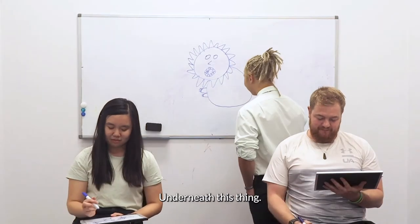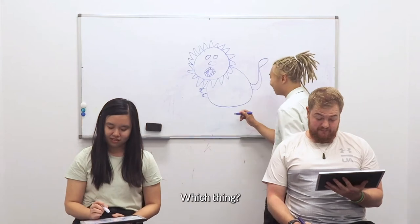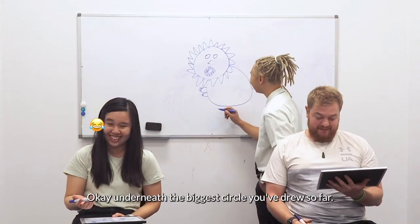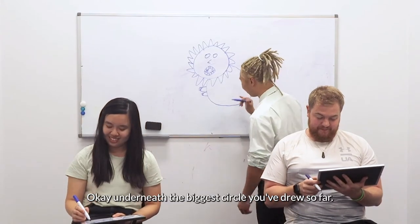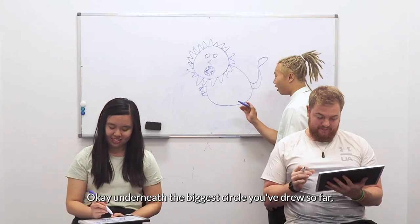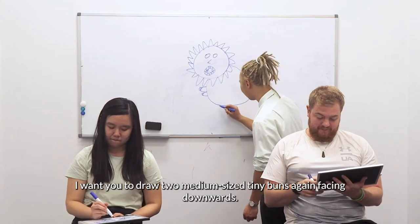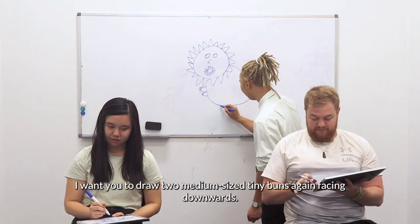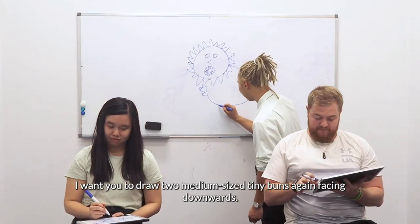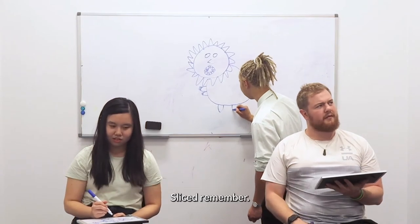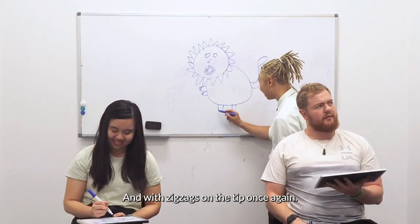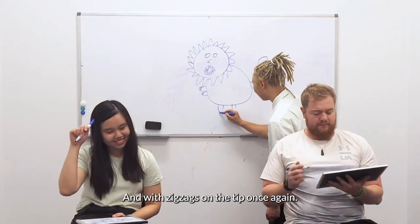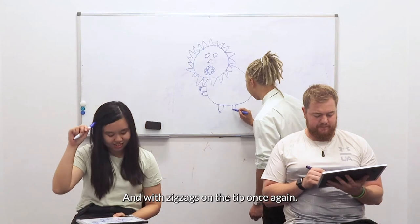Underneath this thing — underneath the biggest circle you've drawn so far — I want you to draw two medium-sized tiny buns again. Facing downwards, sliced. And with zigzags on the tip once again.